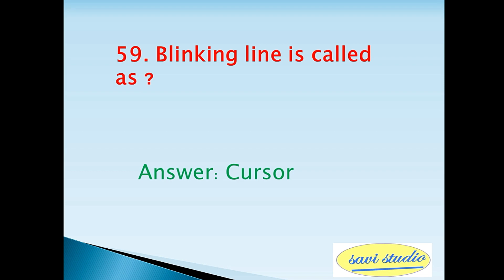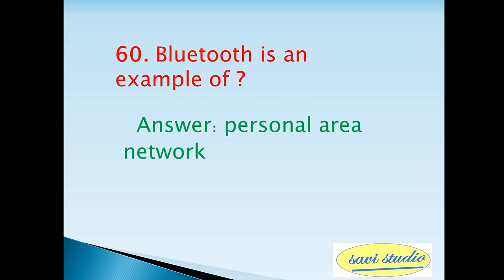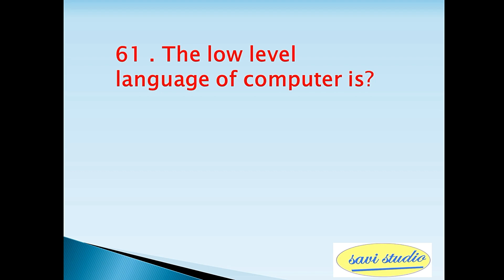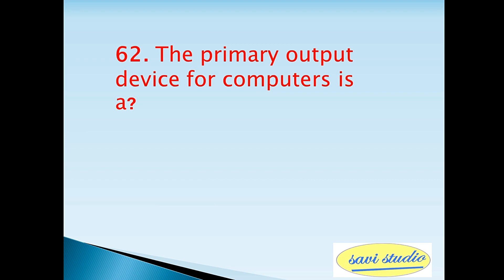Fifty-ninth question: blinking line is called as — answer: cursor. Sixtieth question: Bluetooth is an example of — answer: personal area network. Sixty-first question: the low level language of a computer is — answer: assembly language.